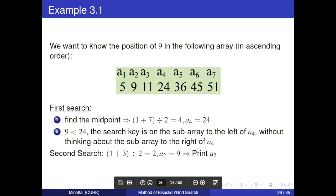Take an example, we want to know the position of 9 in the following array, and this array is arranged in ascending order. In first search, we can find the midpoint by calculation. Here, 24. Because 9 is less than 24, the search key is on the sub-array to the left of 24, and continue the second search. Similarly, find the midpoint 9. 9 is equal to 9, hence print index 2.